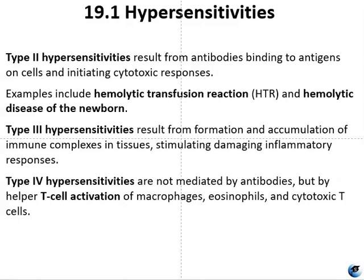Type 4 hypersensitivities are regulated by T cells and involve the action of effector cells. These are organized into subcategories based on T cell subtype, the type of antigen, and the resulting effector mechanism. There is a detailed breakdown of all these types in table 19.5 in the textbook, which was too large to include in the slides.